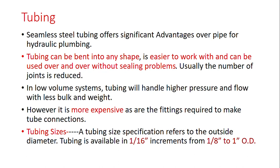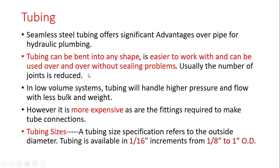Seamless steel tubing offers significant advantages over pipe in hydraulic plumbing. Tubing can be bent into any shape, it is easier to work with, it can be used over and over without sealing problems, and the number of joints is reduced.